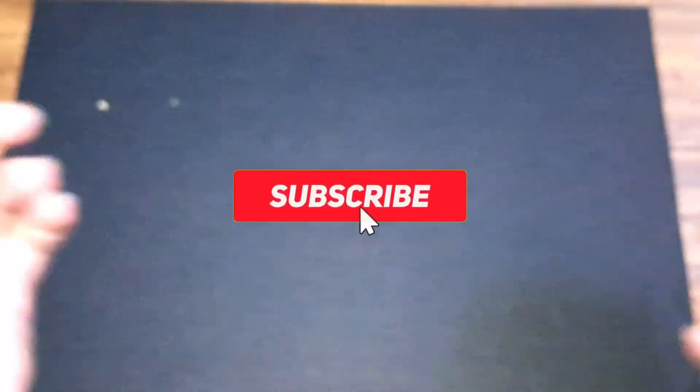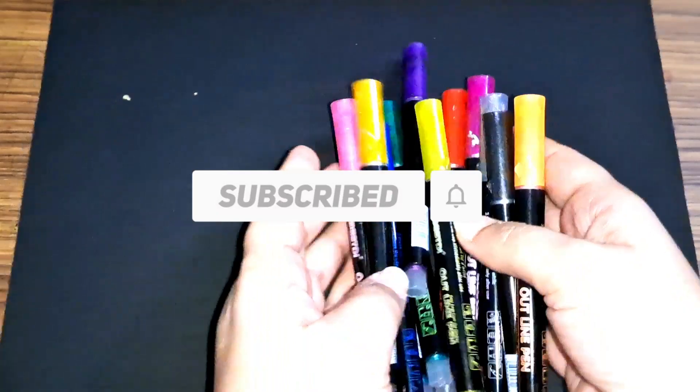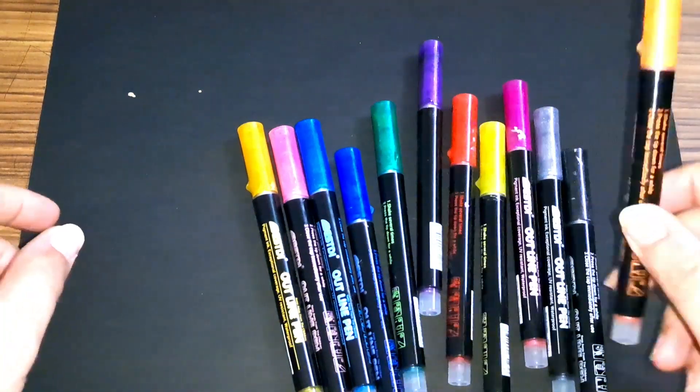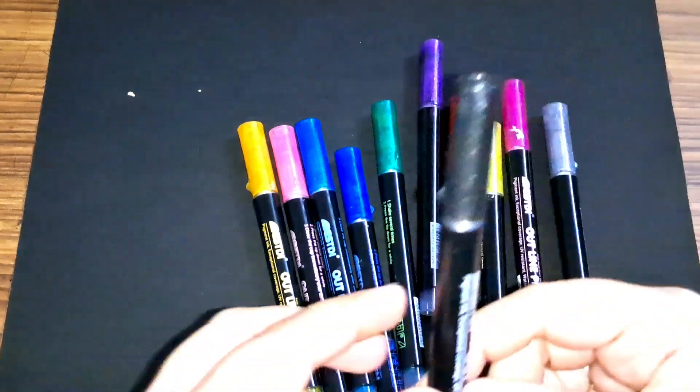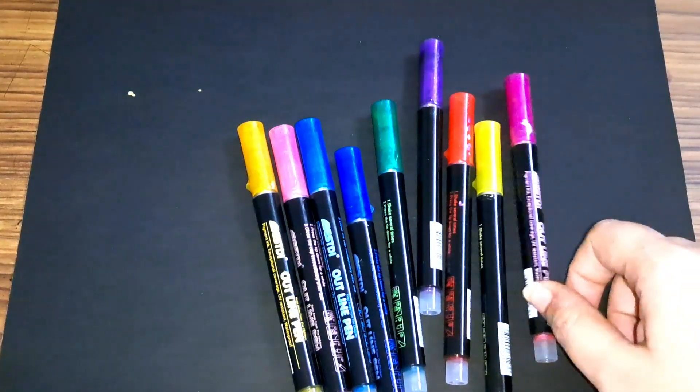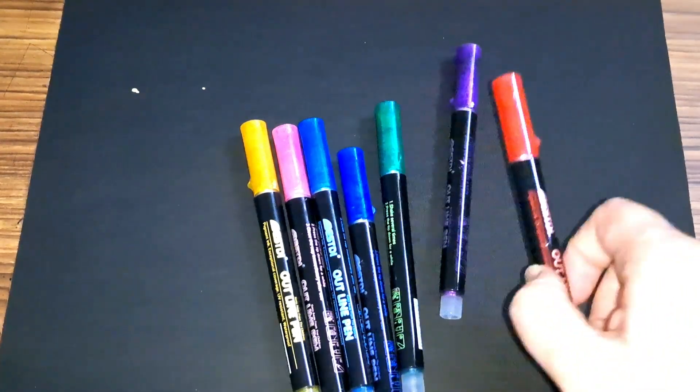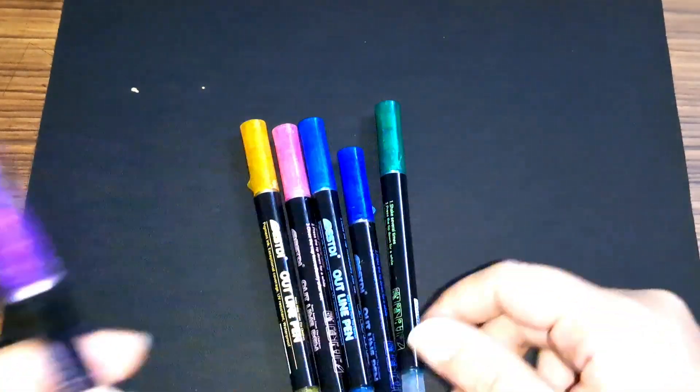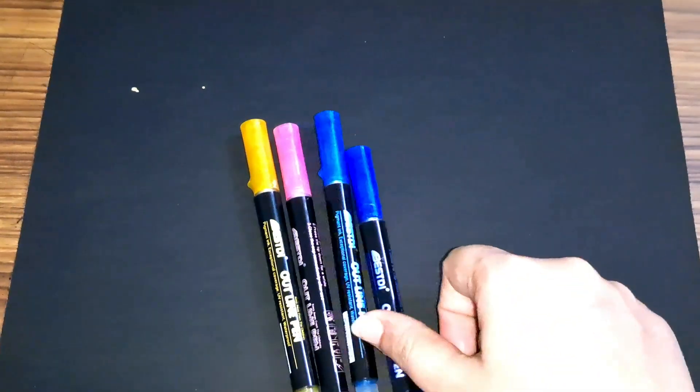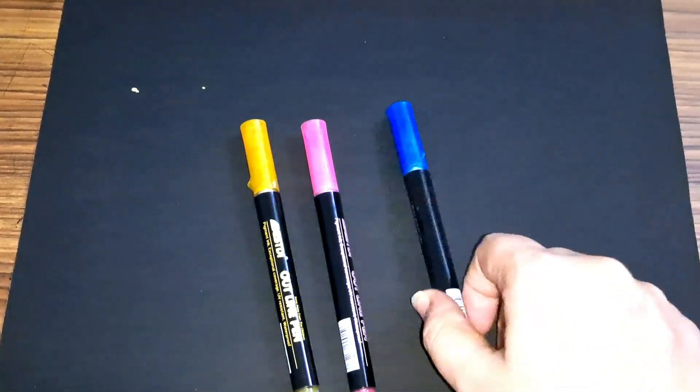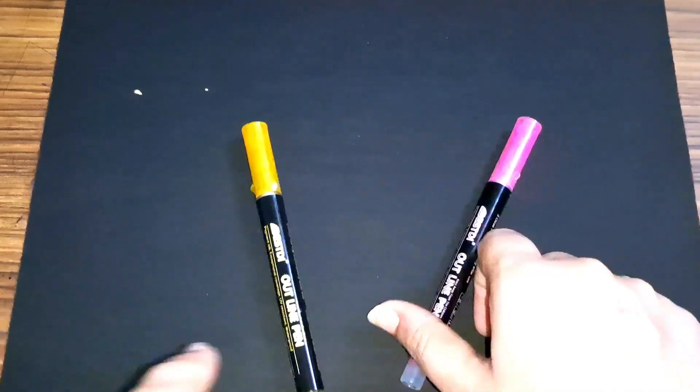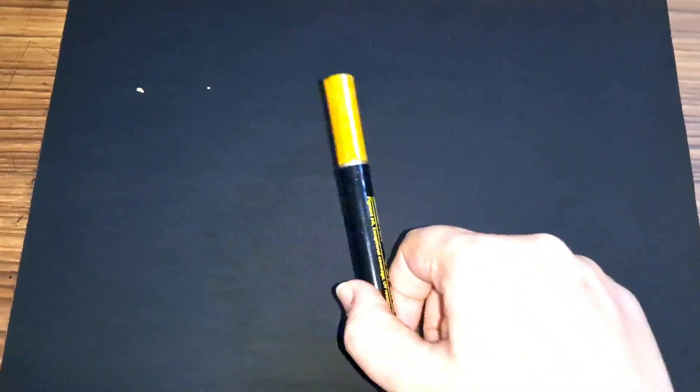Hey kids, let us learn some colors. These are the colors: orange, black, silver, pink, yellow, red, violet, green, dark blue, light blue, light pink, and golden. Now let us draw some shapes. Let us learn some alphabet.